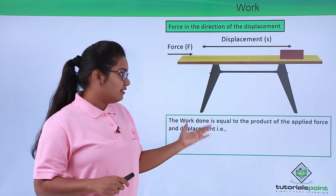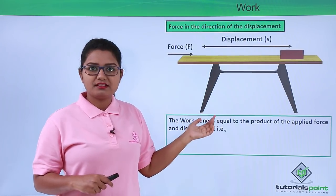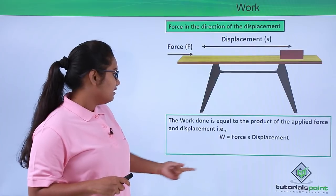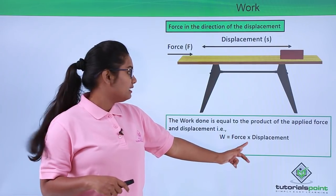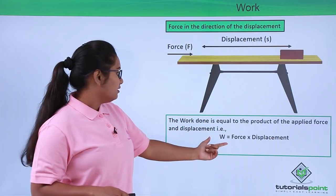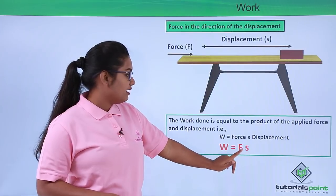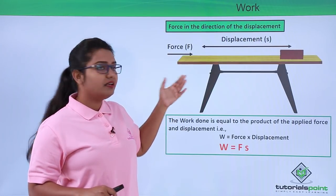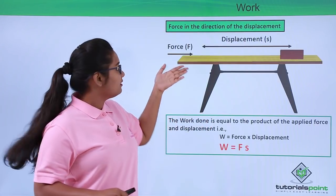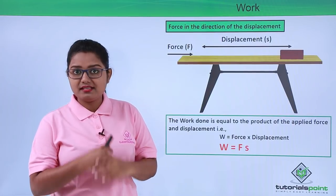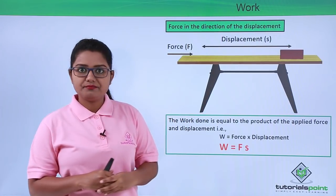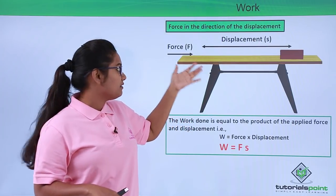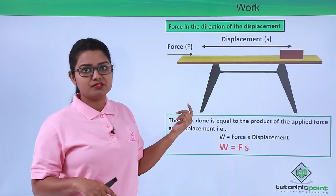The amount of work done is equal to the product of the applied force and the displacement made by the wooden block. So W, which is the work done, equals force multiplied by displacement: W = F × S, where F is the force applied and S is the displacement. This is called work done due to a constant force because the force applied is of a fixed value — it is not changing from time to time.